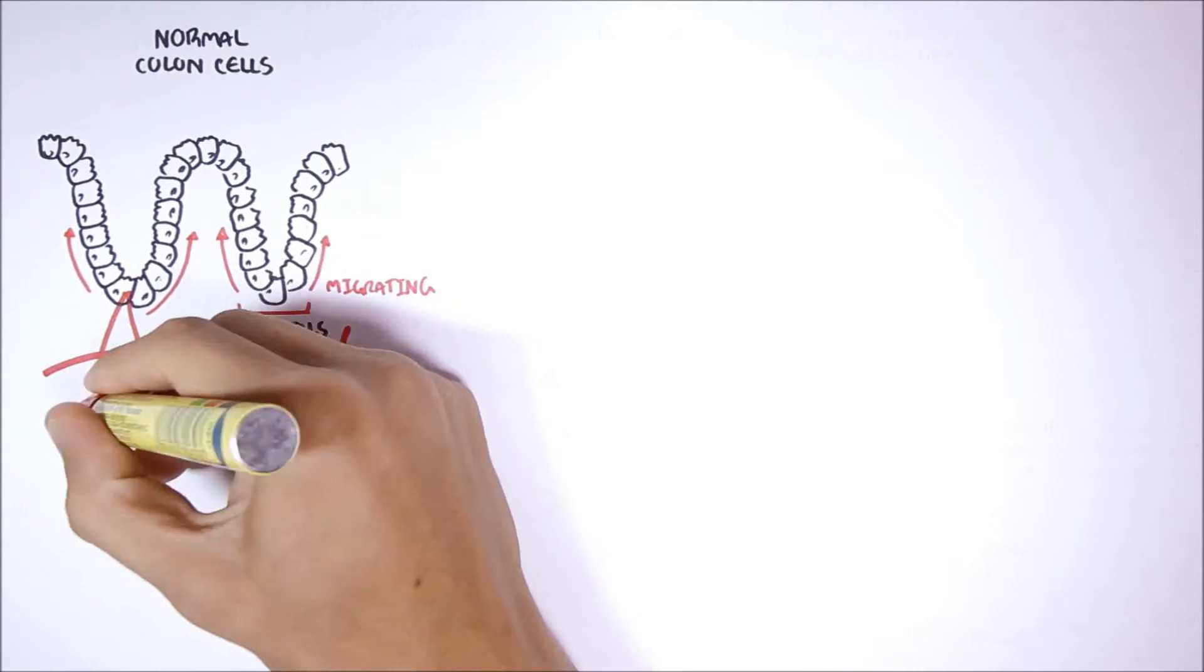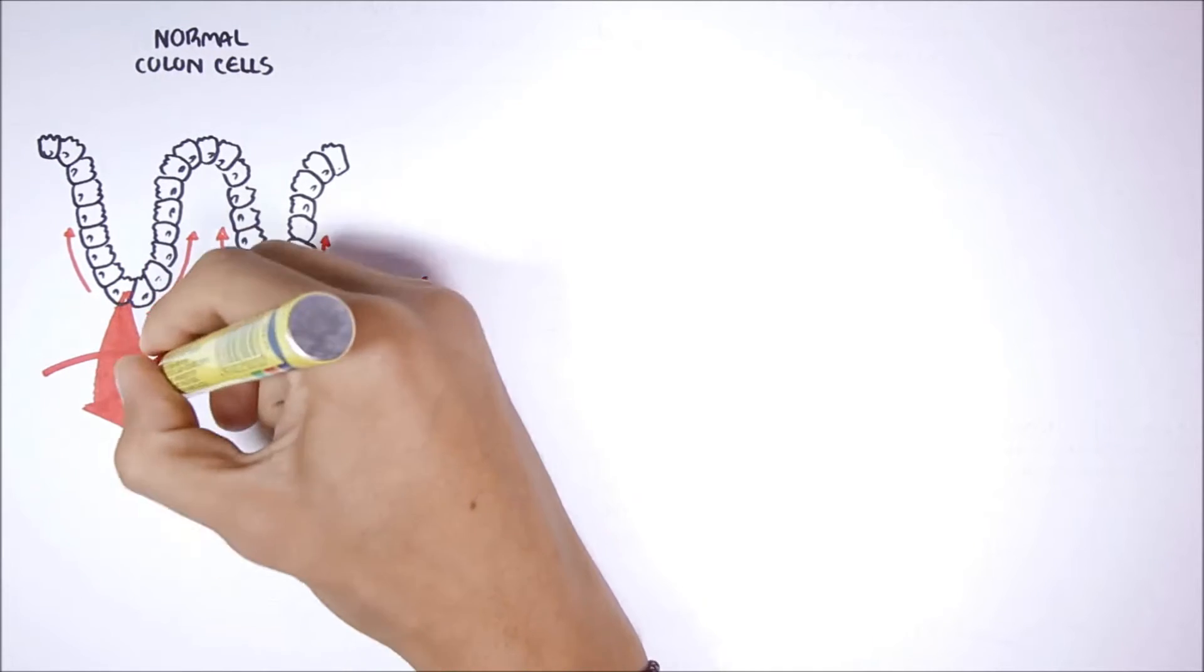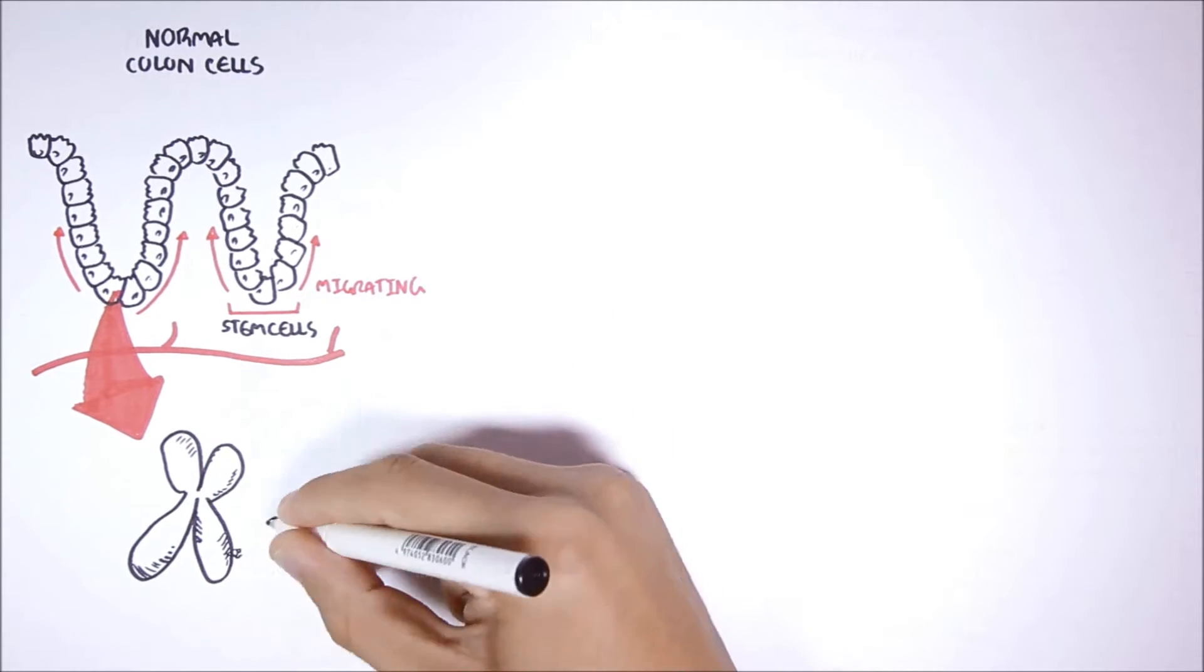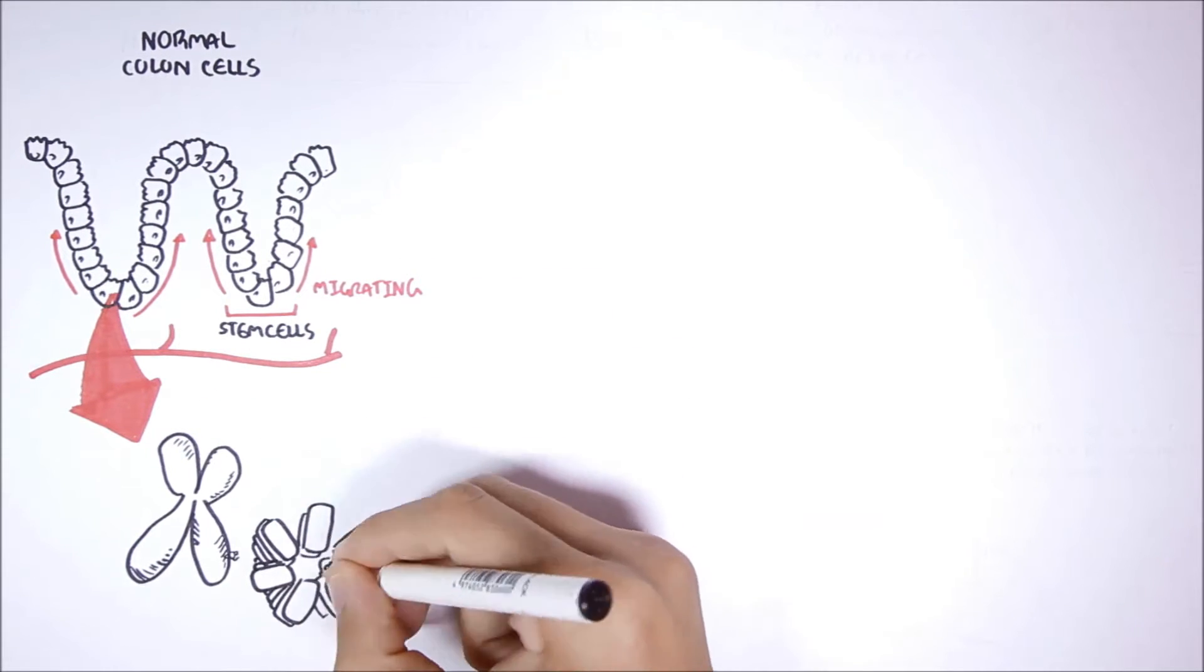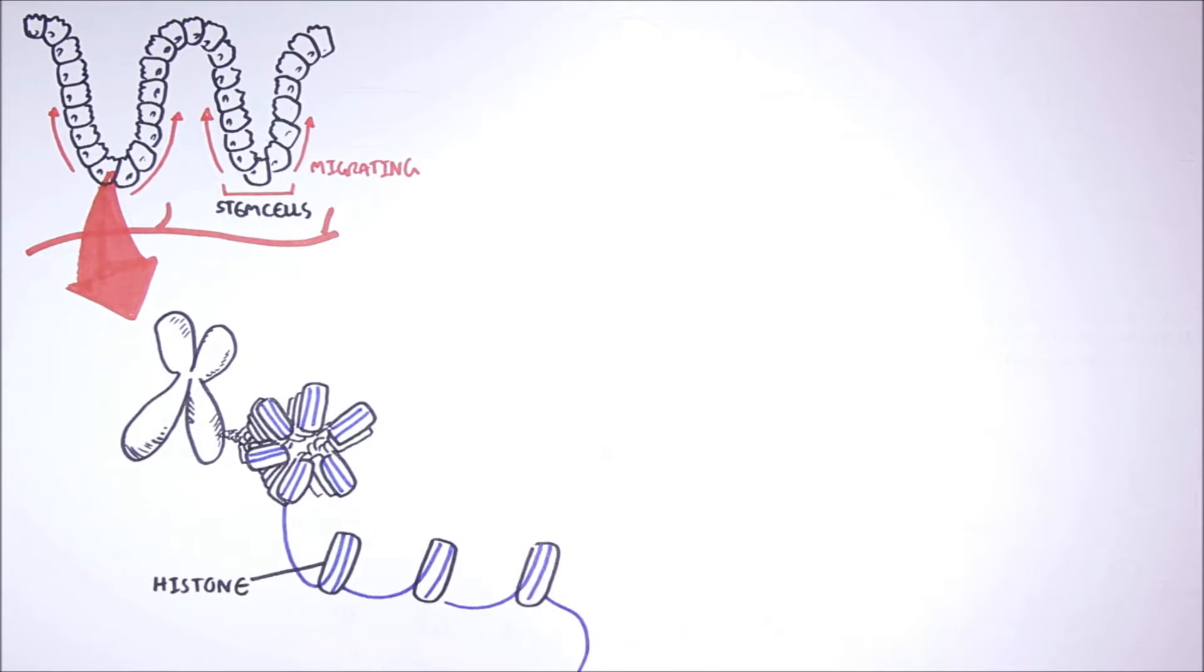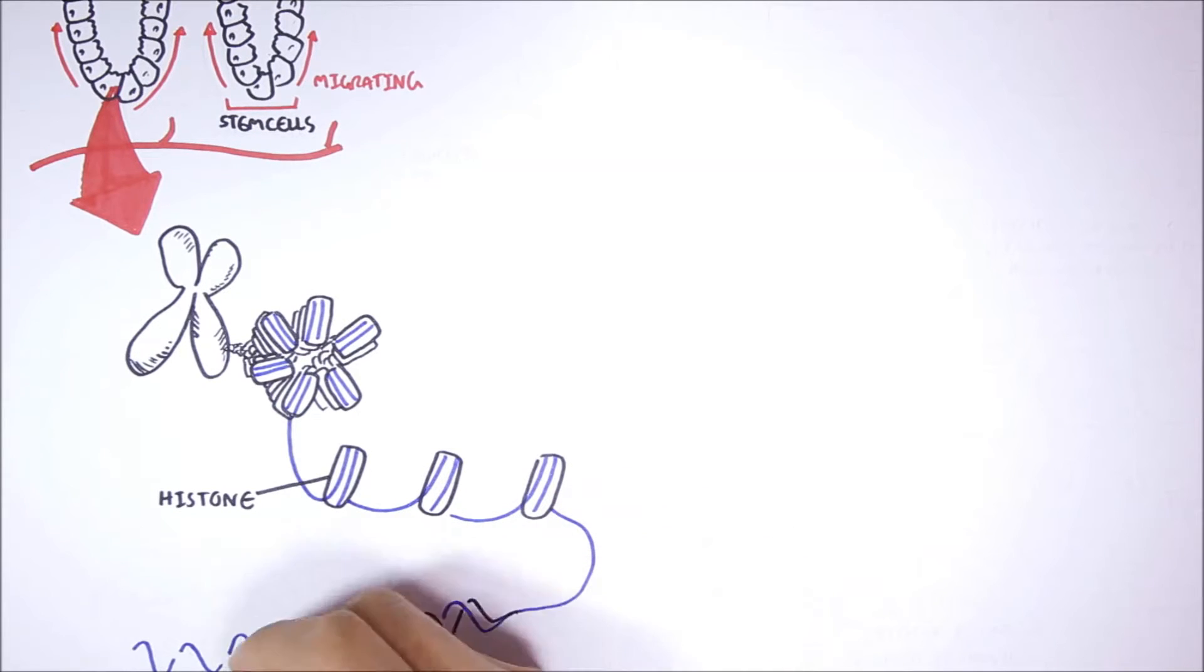If we look into the genetic material of one of these stem cells, their genetic material is DNA, which is found in chromosomes. The DNA is all tangled up around histones. If we remove the histones, here we can see the DNA.